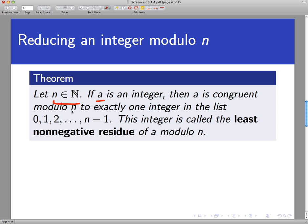There's no finite list of integers to which a is congruent mod n. But there's exactly one element in the list 0, 1, 2, through n minus 1 that a is congruent to.